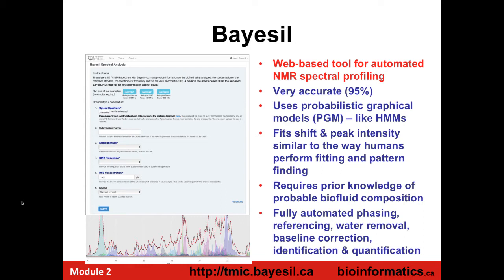Student question: Is this only able to handle certain types of samples? Answer: There's enough similarity between serum or plasma of sheep, cows, mice, and rats. Right now it's specific to a certain set of biofluids — cerebrospinal fluid, plasma, and possibly saliva. Work is being done to expand the libraries to other situations. It somewhat depends on how complex the fluid is — it doesn't work for urine; it fails completely because it's just too complex, and the HMMs just die.